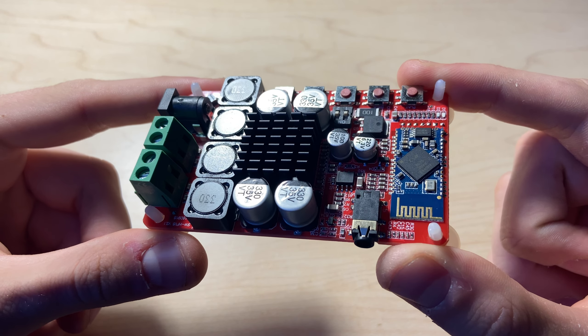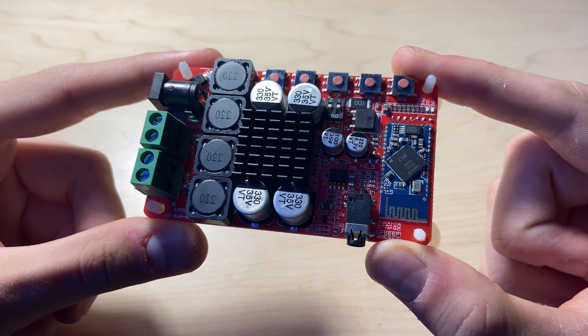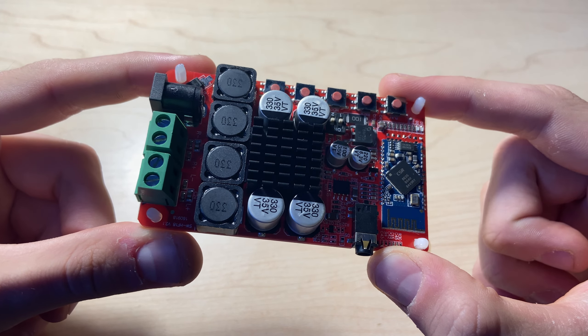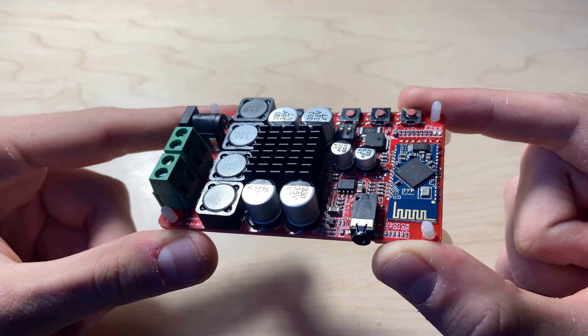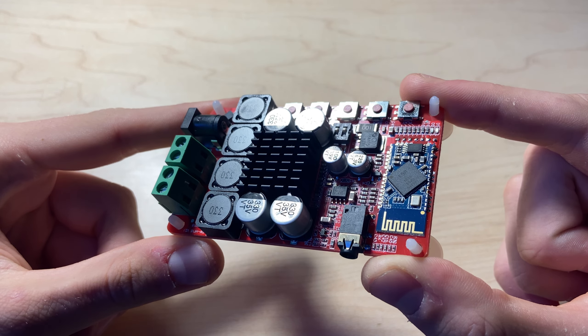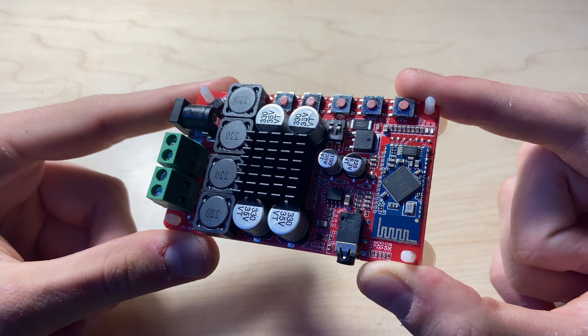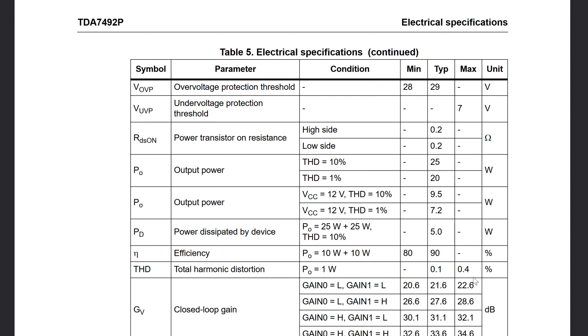Looking at the competing class D amplifier, we'll be using the Sunwoo Audio TDA7492 audio amplifier board. The average THD is rated at 0.1% with an 8 ohm load, which is not bad for a class D amplifier.